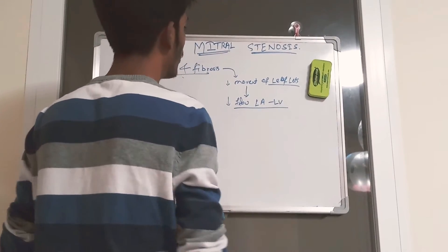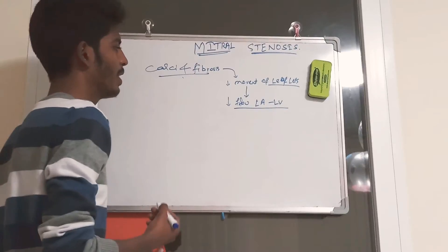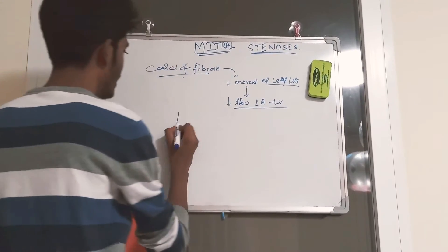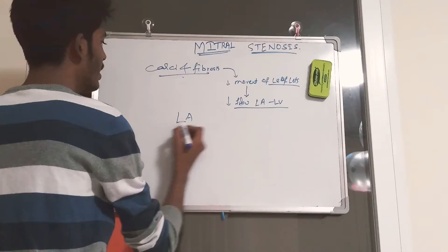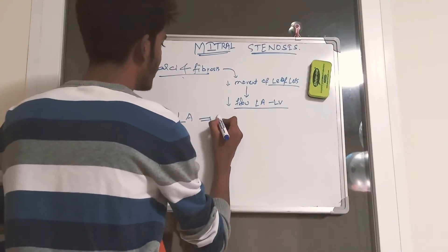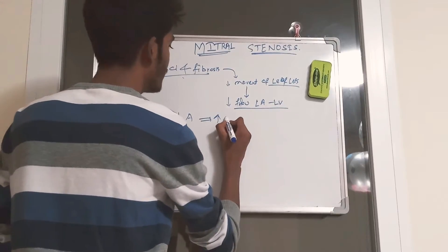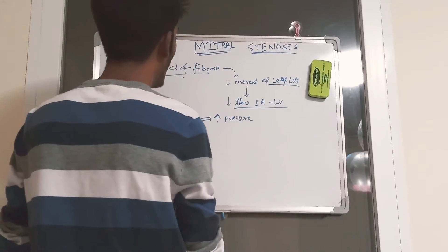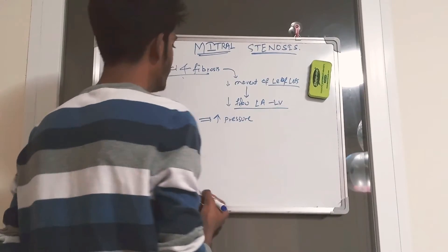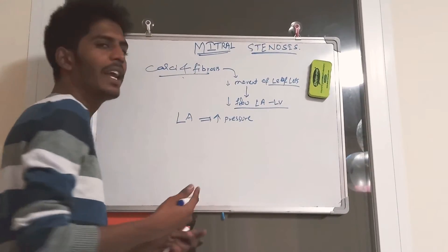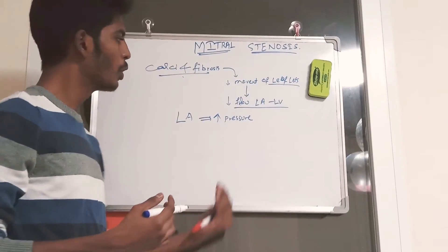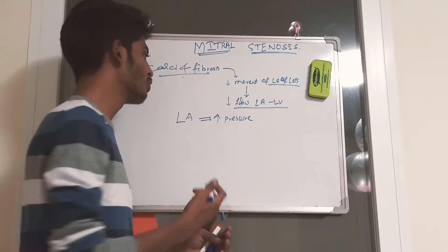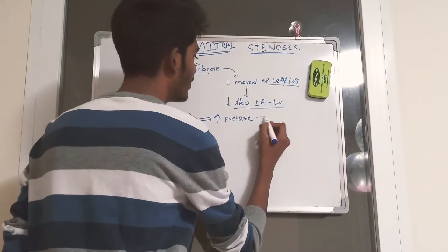The narrowed space causes decreased flow from the left atria to the left ventricle. When there is decreased flow, there is increased pressure in the left atria. To compensate, the atria has to push more blood into the ventricle, which causes dilation.